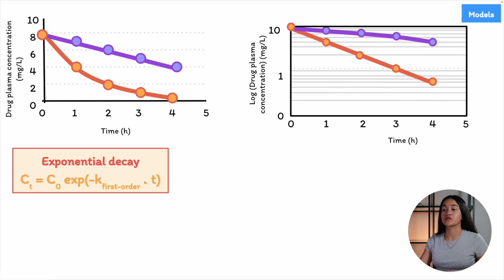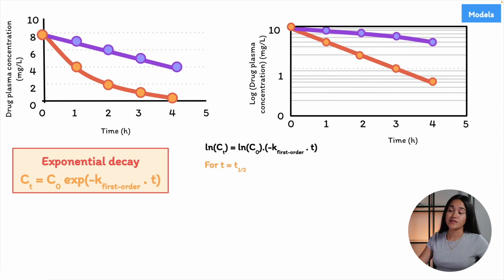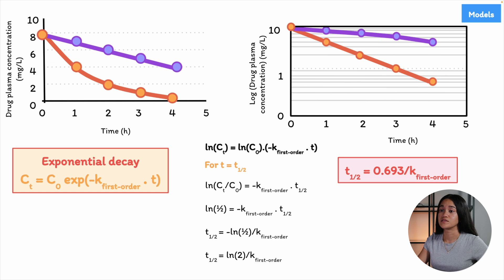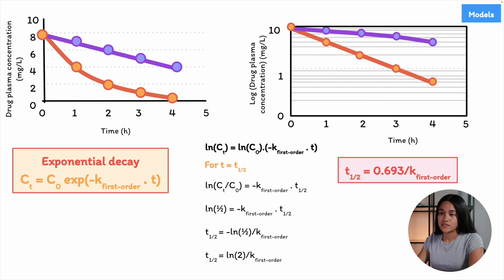Let's consider the half-life for first-order elimination. We can calculate the relationship between half-life and the elimination rate constant k. Taking the natural logarithm of both sides of the first-order equation and solving for the half-life — the time it takes for the concentration to decrease by half — we derive the formula: t½ = ln(2) / k. Since the natural logarithm of 2 is approximately 0.693, we get t½ = 0.693 / k, where k is the elimination rate constant for first-order kinetics.